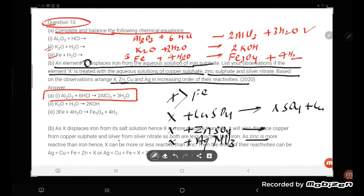So this all is going to displace. Arrange the X, Zn, Cu, Ag in increasing order of reactivity. Right student, this is. So firstly you should know what is the order of reactivity.